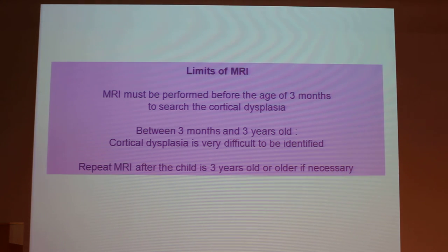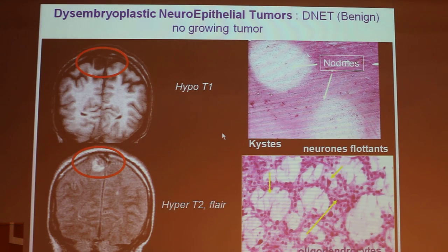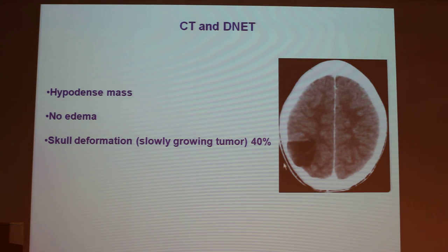It is important to know the limits of the MRI. MRI must be performed before the age of three months — after that, we may not see the dysplasia. Between three months and three years old, cortical dysplasias are very difficult to identify, and you have to repeat the MRI after the child is three years old or older if necessary. Now, the dysembryoplastic neuroepithelial tumor (DNET) is characteristic: hypo-intensity on T1 and hyper-intensity on T2 or FLAIR with oligodendrocytes. On CT scan, you have a non-enhancing mass with no edema and skull deformity.